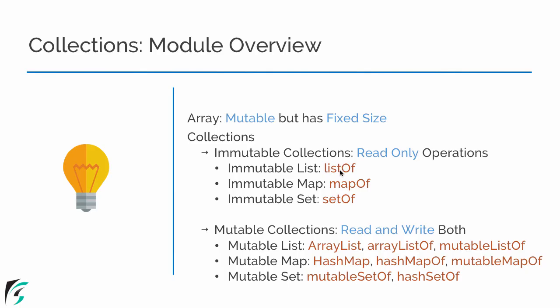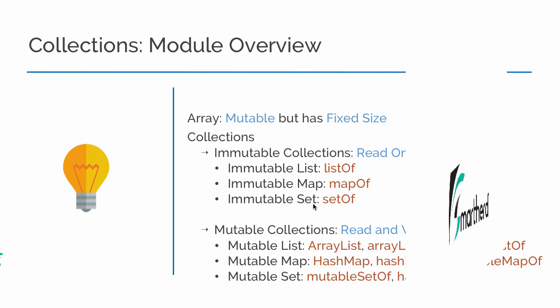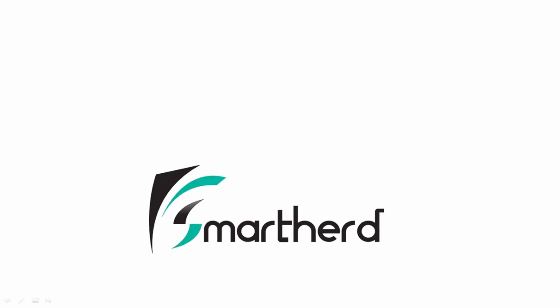To summarize: listOf returns an immutable list, while arrayList, arrayListOf, and mutableListOf all produce mutable lists — you can use any of these three in your code. In the next two videos we will check out Map and Sets in Kotlin. This is Shreng Siddharth signing off — thanks for watching and have a good day!